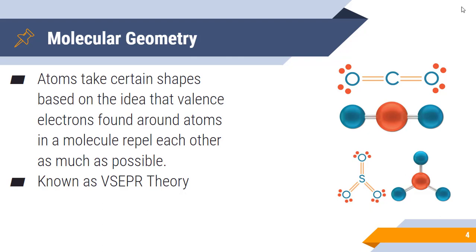VSEPR theory basically states that atoms and lone pairs surrounding a central atom are going to repel each other as much as possible, which determines the shape that the molecule has.